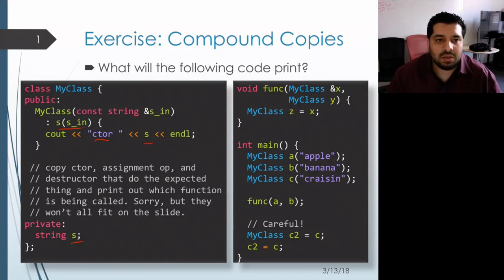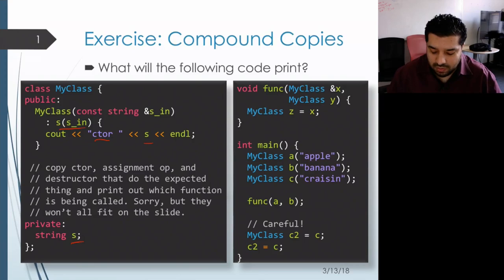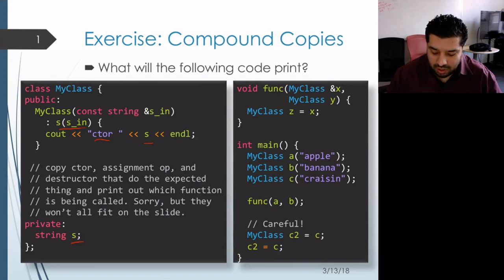There is an assignment operator that prints out 'assign' and then the previously saved string as well as the new string it's receiving as part of the copy, and finally a destructor that prints out 'dtor' and then the string that's currently saved.